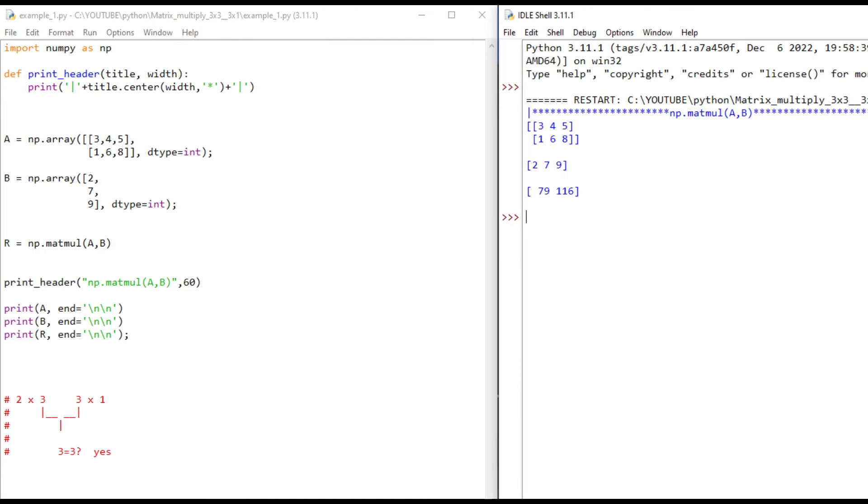At the bottom, look at that, 2 by 3, 3 by 1. Does 3 equal 3? Yes. We can do multiplication on these two matrices.